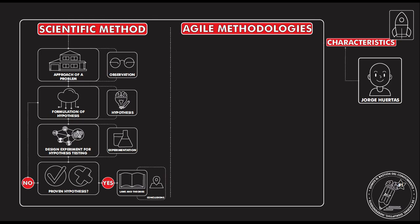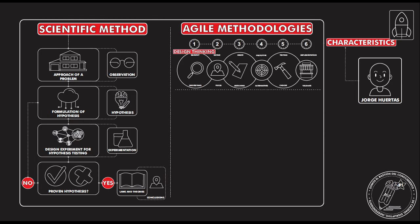Agile Methodologies have a different approach. The Scientific Method is a linear methodology — you cannot work on different stages at the same time. Without the formulation of a hypothesis, you cannot start developing the experiment to test your idea; you have to keep moving forward stage by stage. Agile Methodologies are not linear, meaning you can be working on different stages at the same time. Design Thinking and other agile methodologies have different tools for each stage.